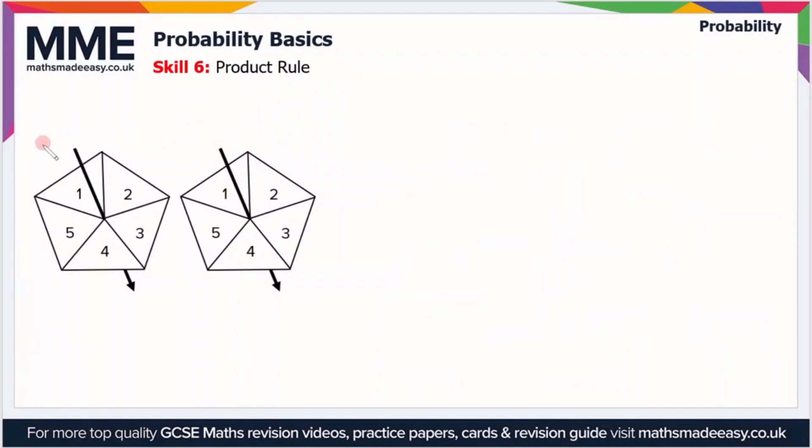Moving on, the last skill we'll look at is the product rule. So suppose I want to know the total number of outcomes. Now I could do the grid again as I did in the previous example, but there's a much simpler way.